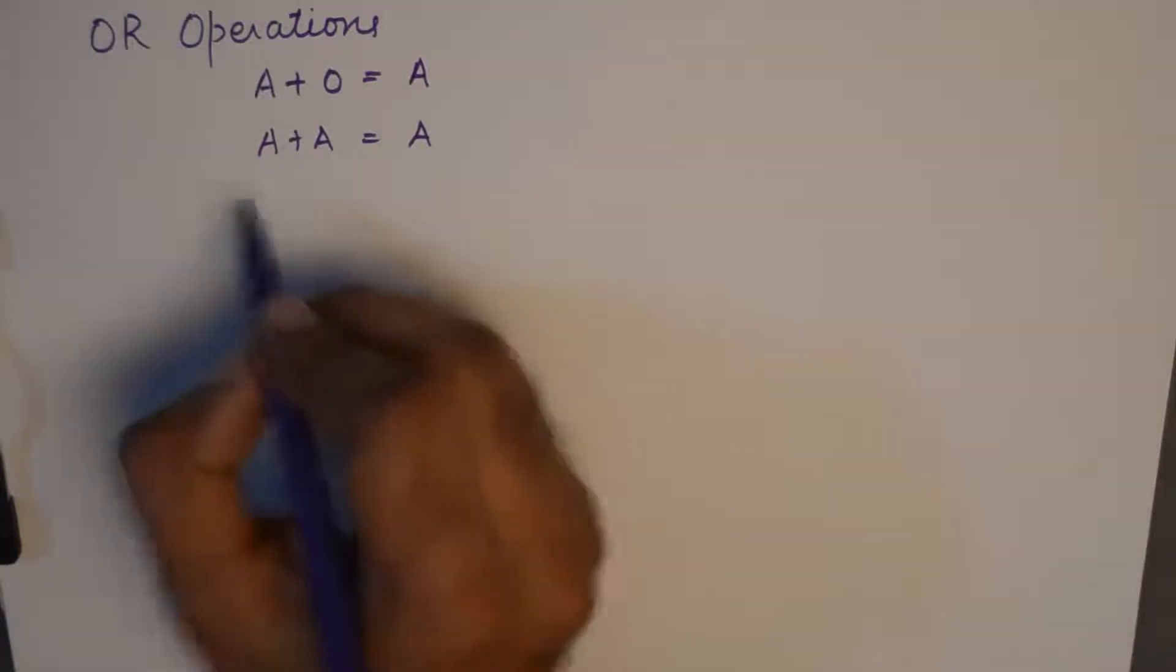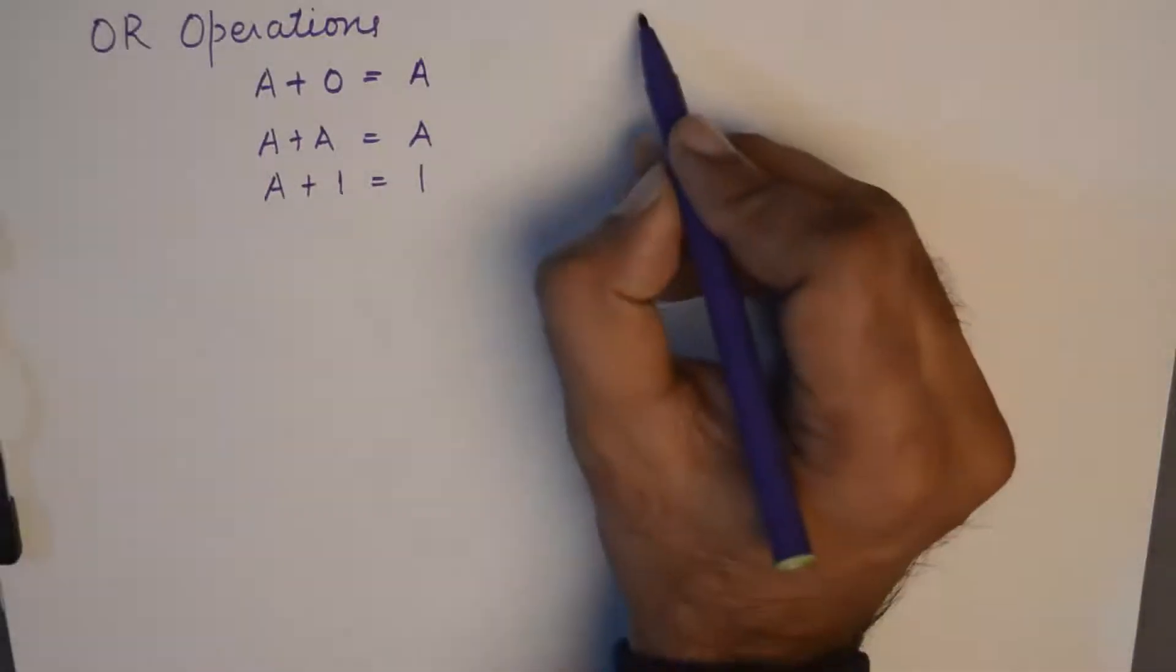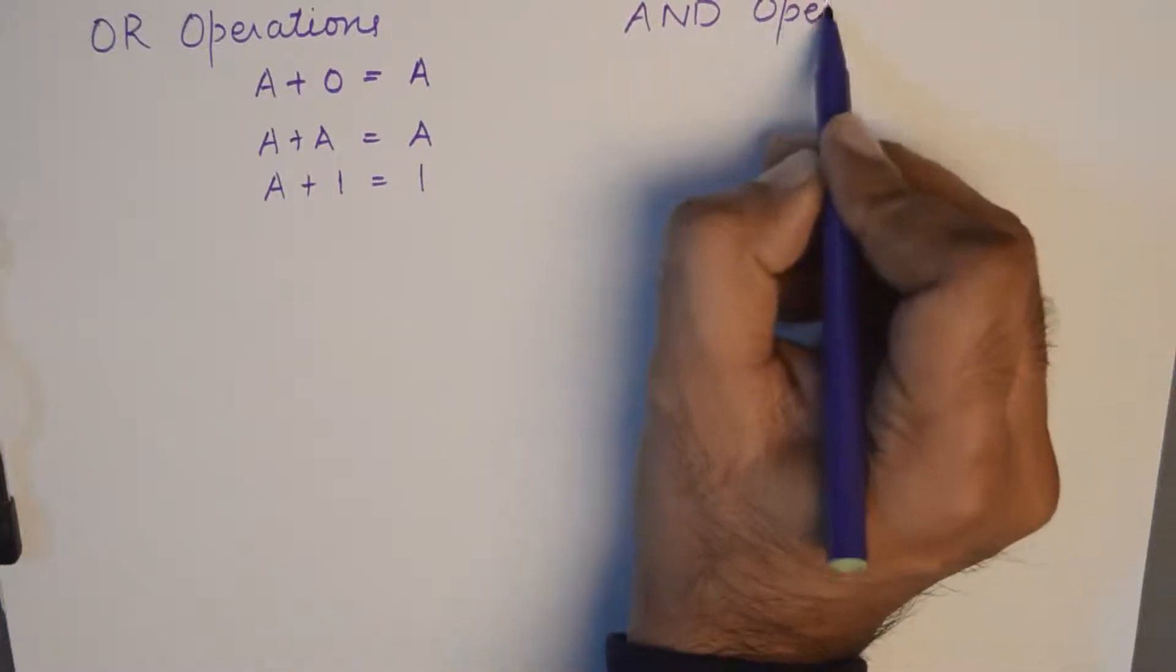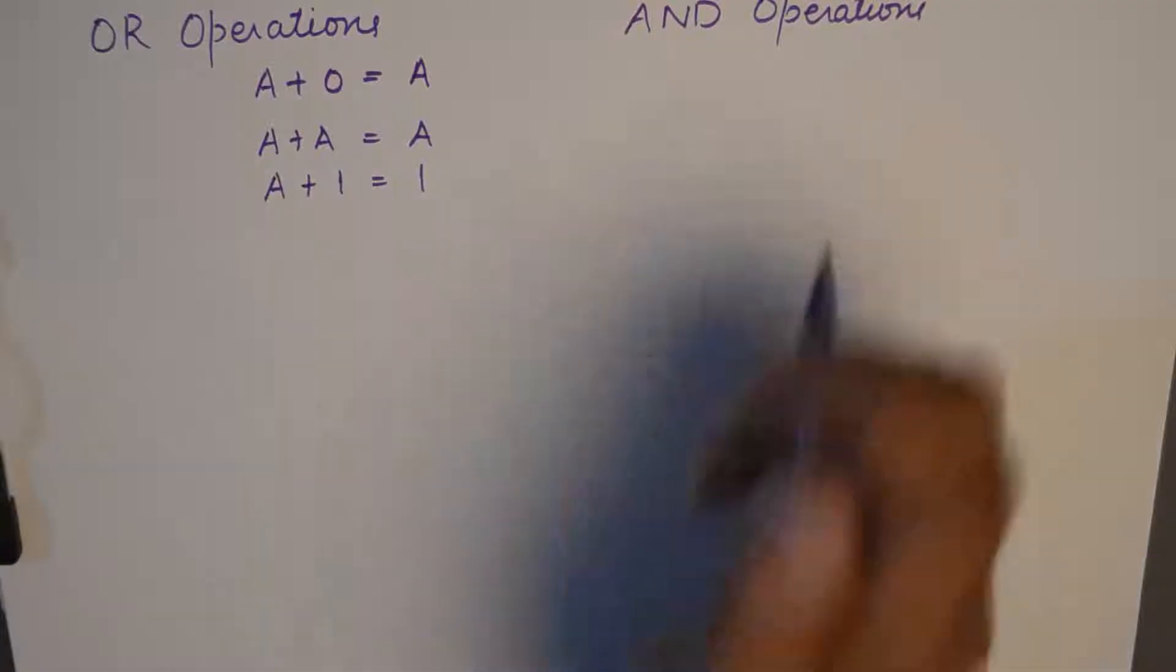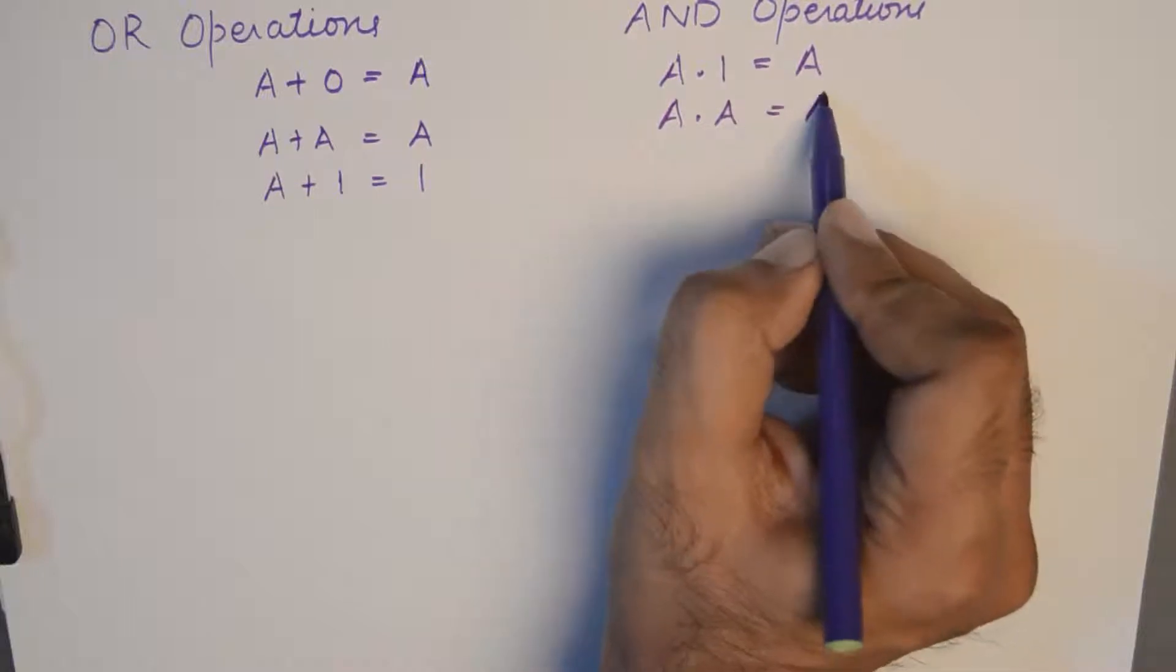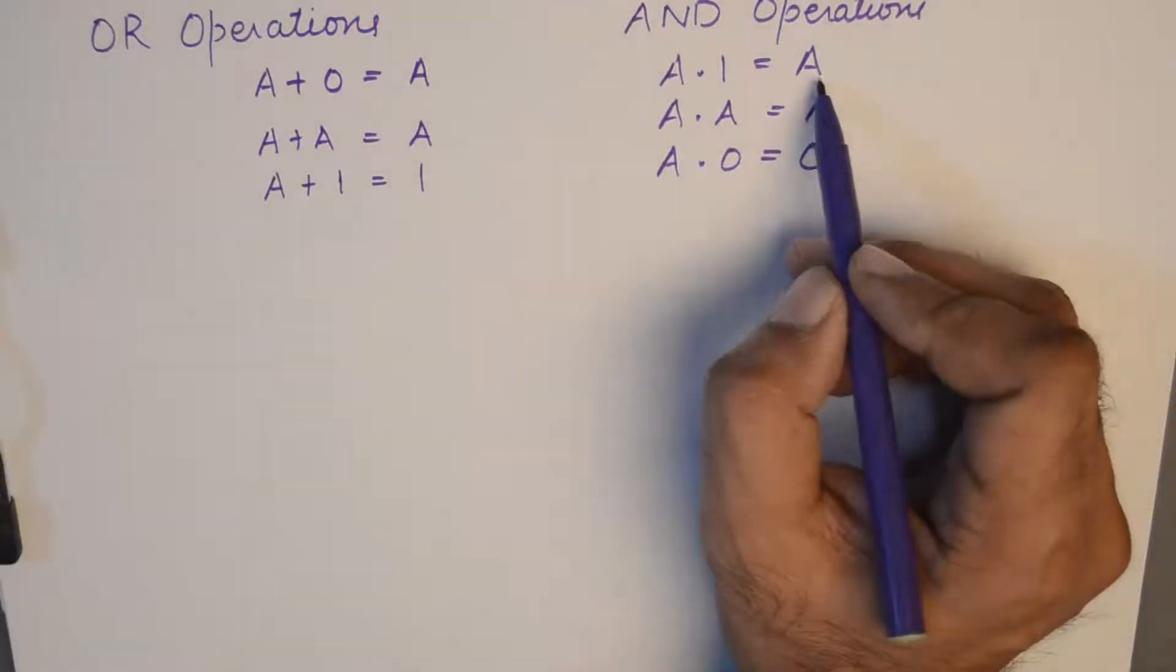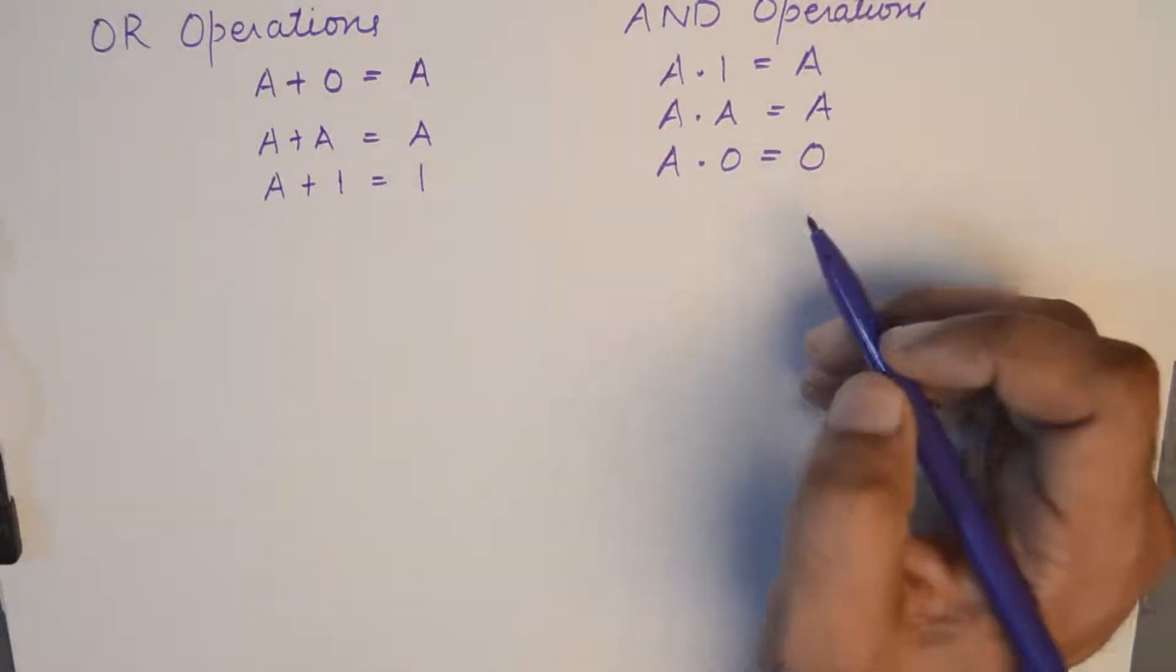And then we have the AND operations. So you've got some basic laws for AND operations. So it says that A dot 1 is A and A dot A is A and A dot 0 is 0, which are pretty easy to remember and formulate. If A is 1 then 1 and 1 is 1, and if A is 0 then 0 dot 1 is 0. So whatever the value of A is taken here will reflect here and so on and so forth. These are super easy to prove.